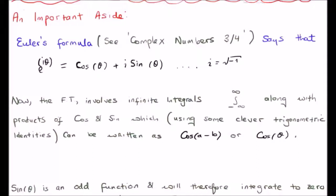Euler's formula is stated here. We say that e to the i theta is equal to cosine theta plus i times the sine of theta, where i is equal to the square root of minus one.